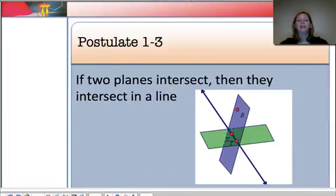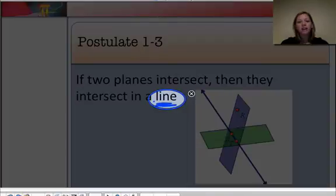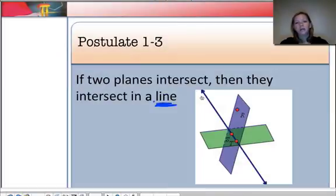Our next postulate is kind of difficult to visualize, but we'll talk about some real-life examples that might help. The next postulate, postulate 1-3, says if two planes intersect, if they intersect, if they meet, then they will intersect in a line. This is really important. Not part of a line, not a segment, not just a little piece, not just points, but an entire line.